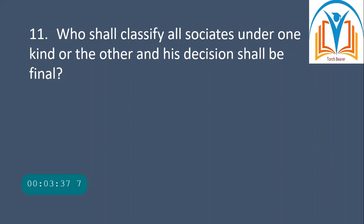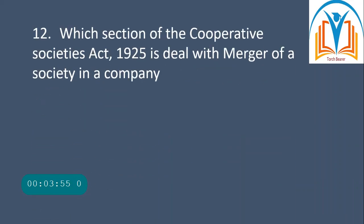The Registrar shall classify all societies under one kind or the other, and his decision shall be final. Next question: which section of the Cooperative Societies Act 1925 deals with merger of a society in a company?